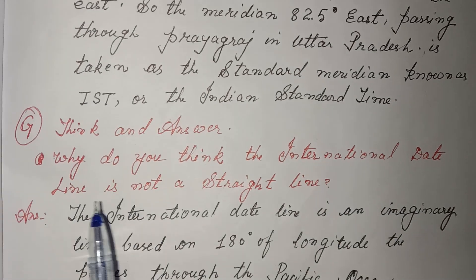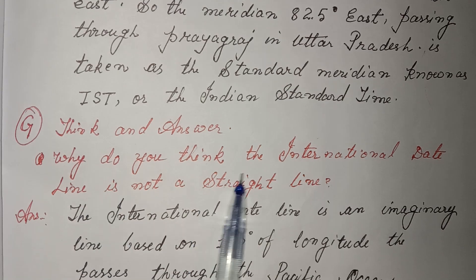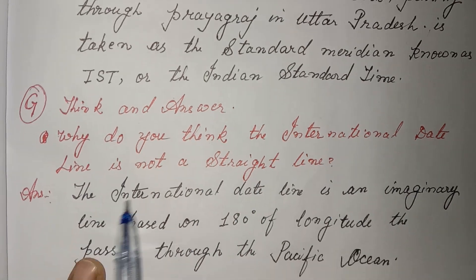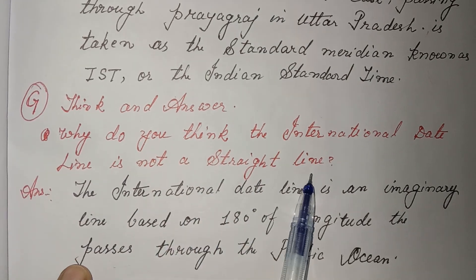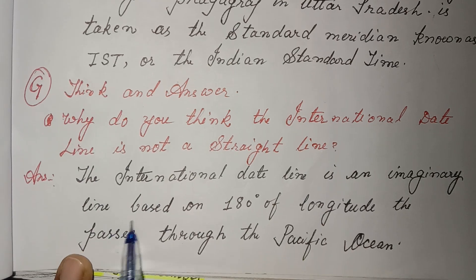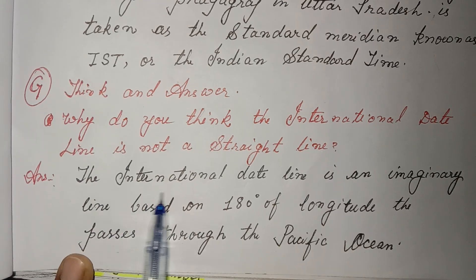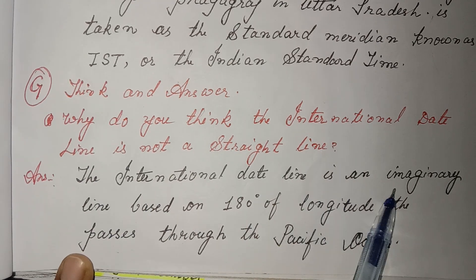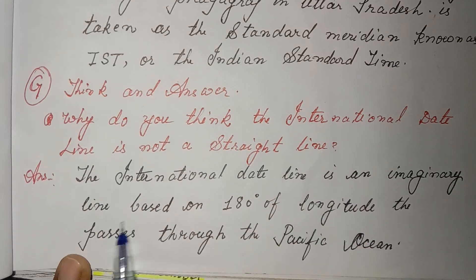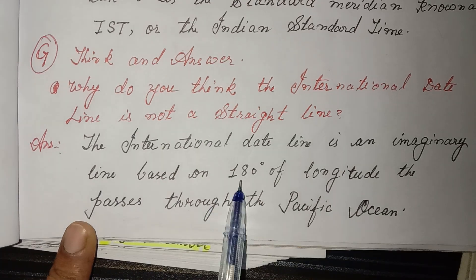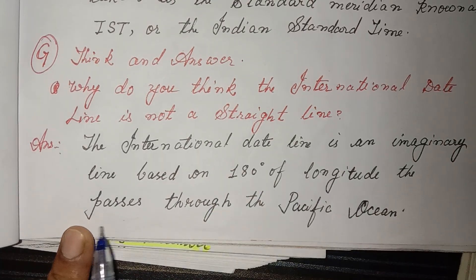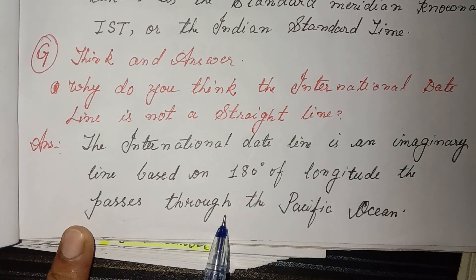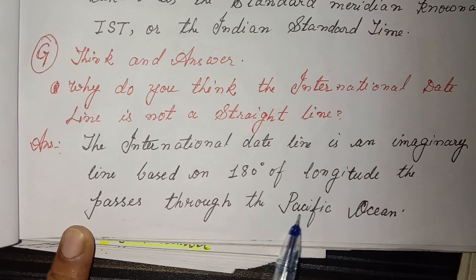Think and answer: why do you think the International Date Line is not a straight line? Answer: the International Date Line is an imaginary line based on 180 degrees of longitude that passes through the Pacific Ocean.